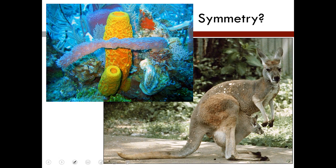Looking at example A — that animal does not exhibit symmetry, it is asymmetrical. As opposed to the bilateral symmetry seen in example B. Let us now continue.